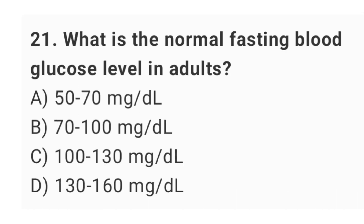Question number 21: What is the normal fasting blood glucose level in adults? The right answer is option B: 70 up to 100 mg per deciliter.